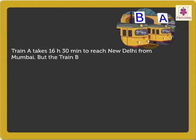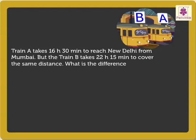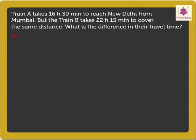But train B takes 22 hours 15 minutes to cover the same distance. What is the difference in their travel time?